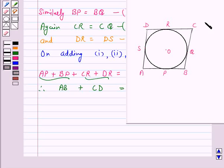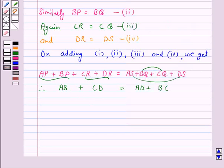Now, since ABCD is a parallelogram therefore AB is equal to CD and BC is equal to AD. So, we have twice AB is equal to twice BC